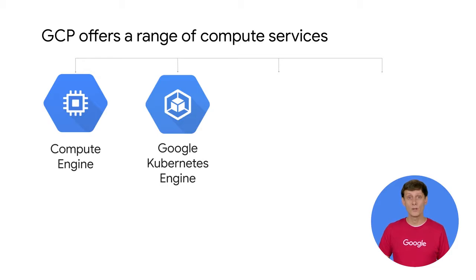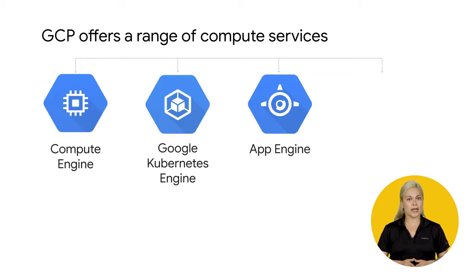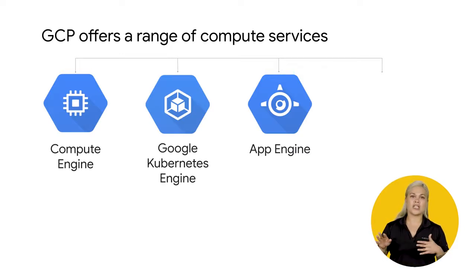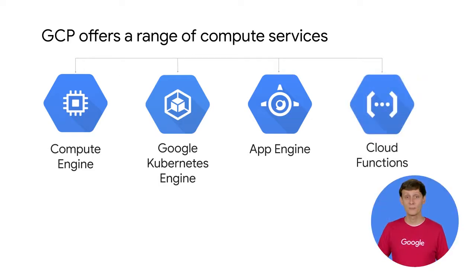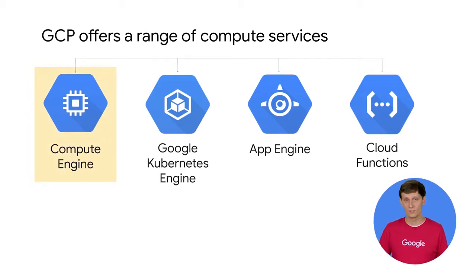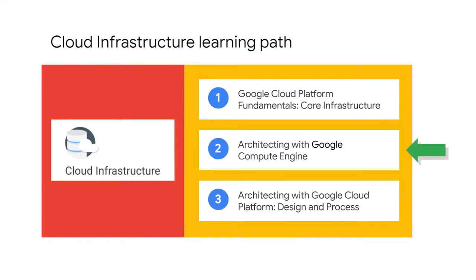Think of containerization as a way to package code that's designed to be highly portable and to use resources very efficiently. And think of Kubernetes as a way to orchestrate code in containers. App Engine is GCP's fully managed platform as a service framework. That means it's a way to run code in the cloud without having to worry about infrastructure. You just focus on your code and let Google deal with all the provisioning and resource management. You can learn a lot more about App Engine in the Developing Applications with Google Cloud Platform course series. Cloud Functions is a completely serverless execution environment, or functions as a service. It executes your code in response to events, whether those events occur once a day or many times per second. Google scales resources as required, but you only pay for the service while your code runs. The Developing Applications with Google Cloud Platform course series also discusses Cloud Functions. In this series of courses, Compute Engine will be our main focus.